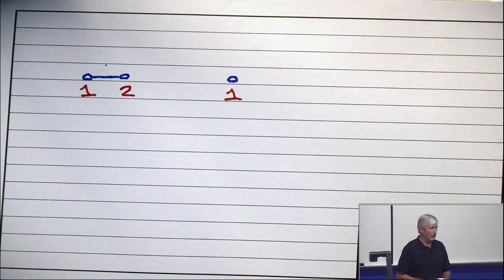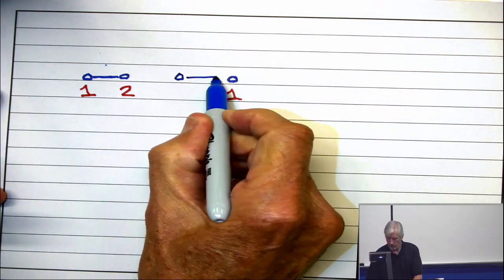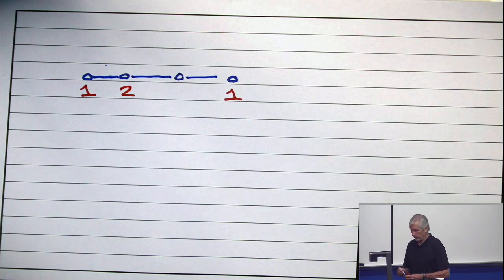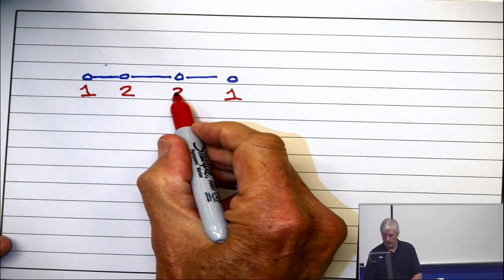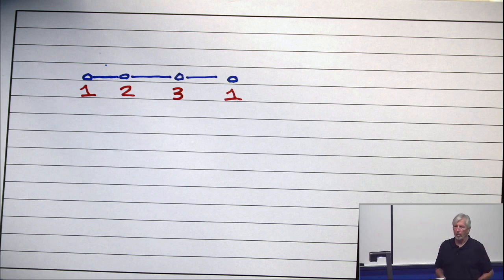And now you can see what's coming. And now I say, oh. And now FirstFit would color it three. So FirstFit, in this case, is clearly not optimal.